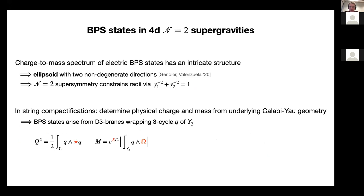In that direction there is already an interesting answer without making any reference to the higher-dimensional origin of the theory. For instance, if you look at the charge-to-mass factors for electrically charged BPS states, then you find that these vectors must lie on an ellipsoid, and in fact you can compute the radii of this ellipsoid just from the supergravity data. We found that if you just use some standard N=2 supersymmetry constraints, you are already able to relate these radii in a specific way. Now we don't want to just look at any 4D supergravity but those we can obtain from type IIb, so we can compute both the charge and the mass of these states from integrals on the Calabi-Yau manifold. The Hodge star, the Kähler potential, and the holomorphic three-form all appear in this expression — and these are all quantities we know how they behave when we move close to the boundary.